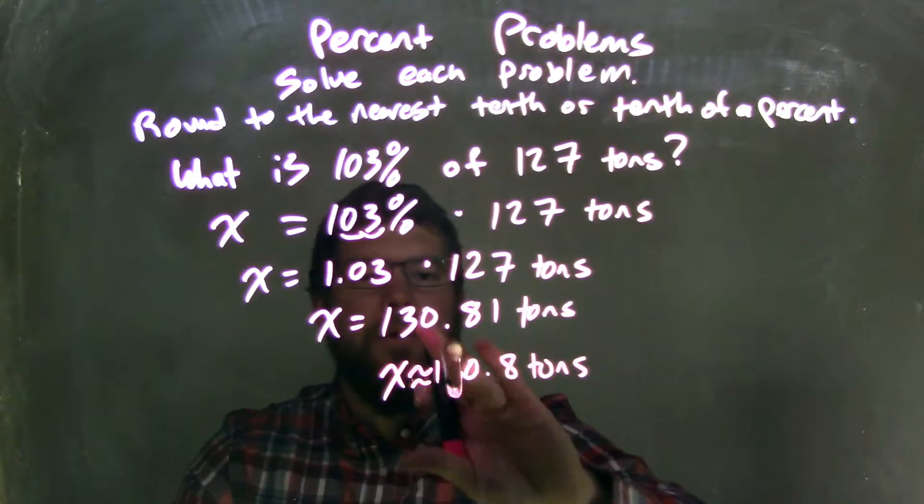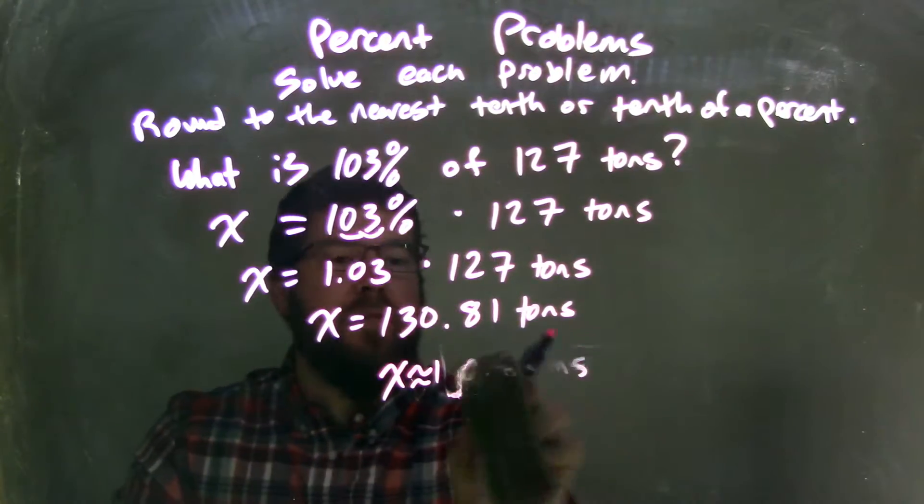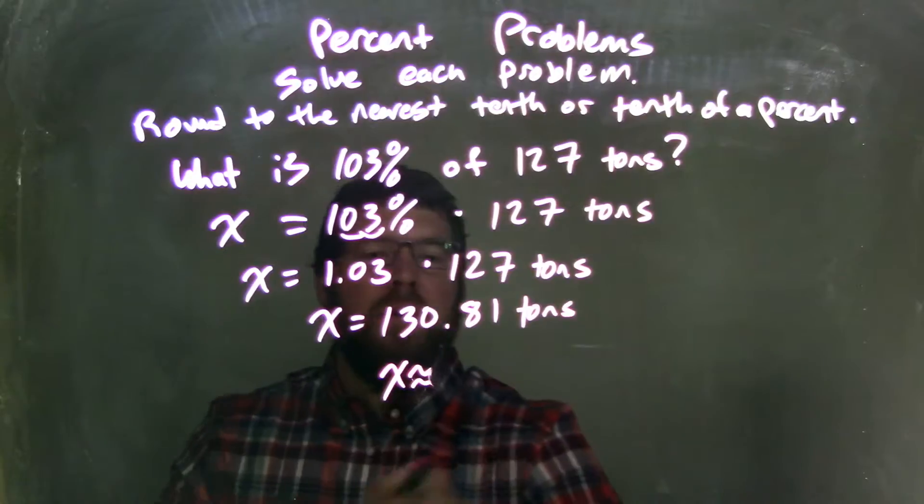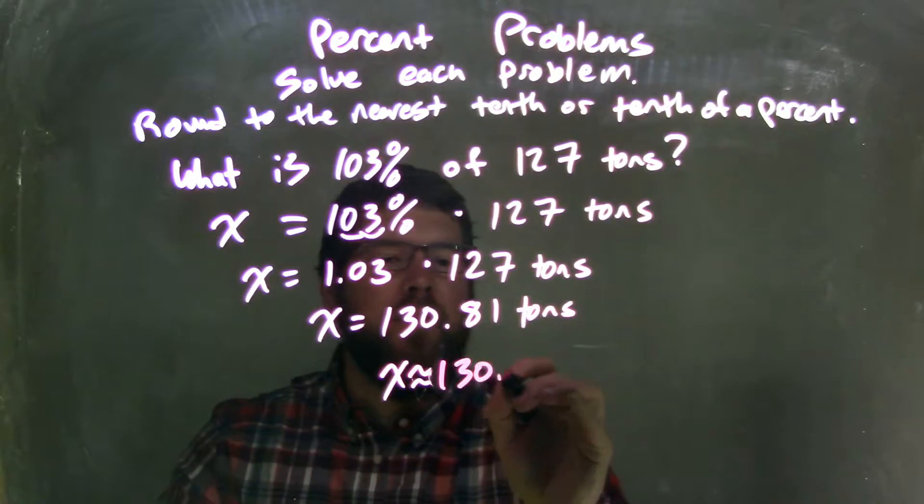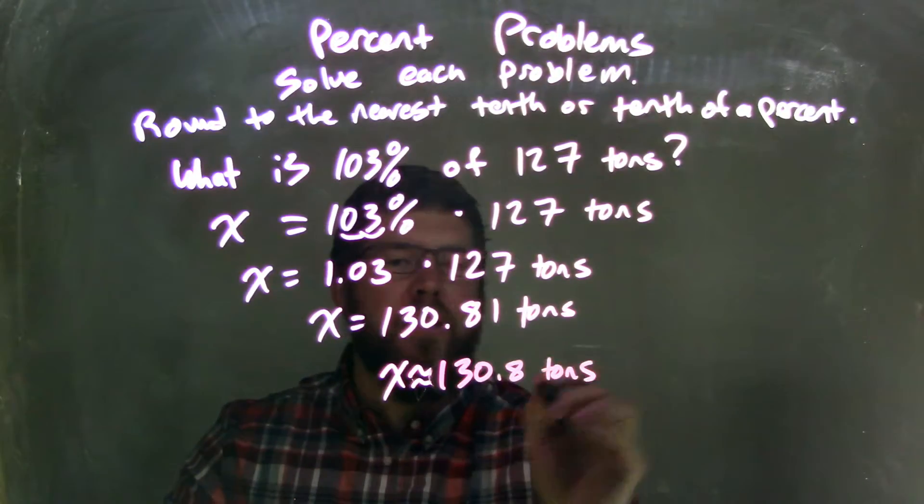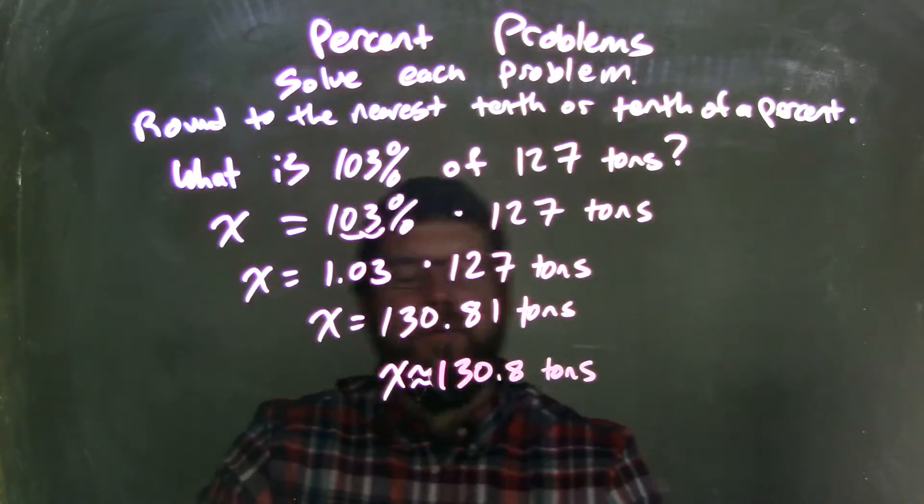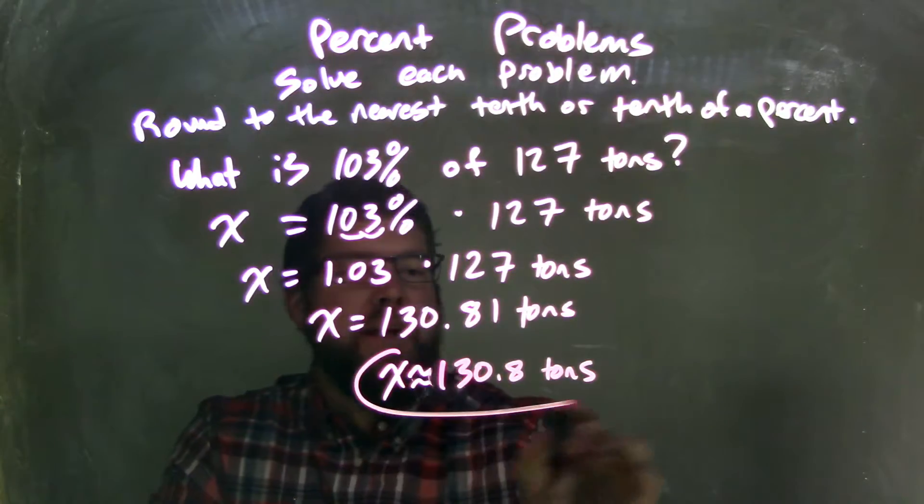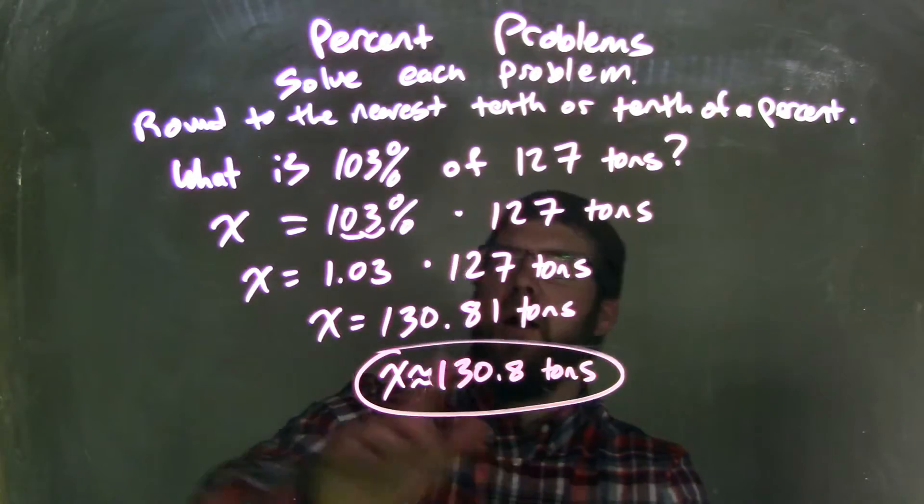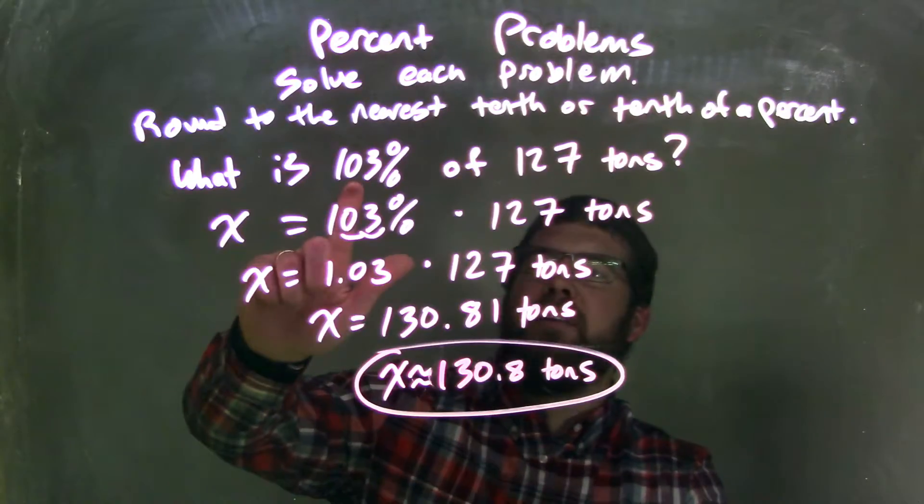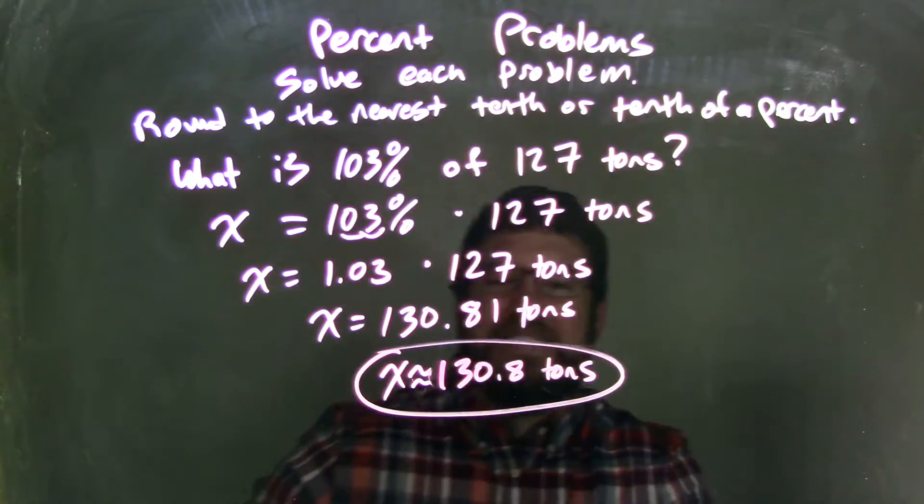Let me rewrite that more clearly. So we have x is approximately equal to 130.8 tons. And that answers our question. 130.8 tons is 103% of 127 tons.